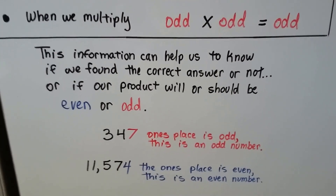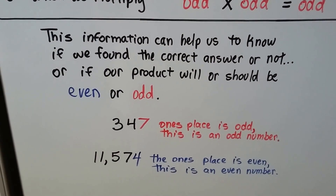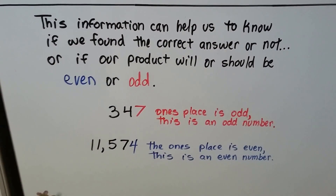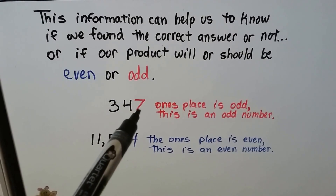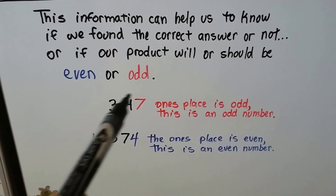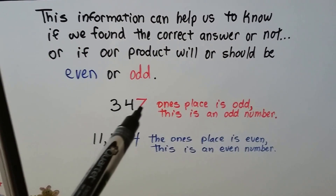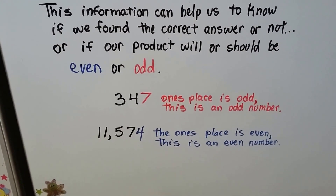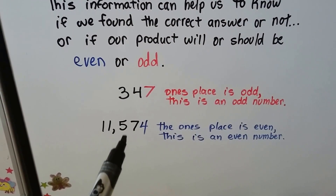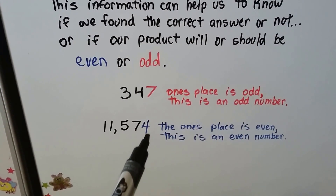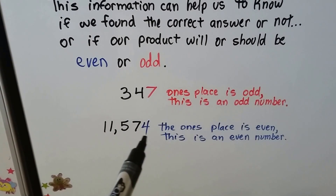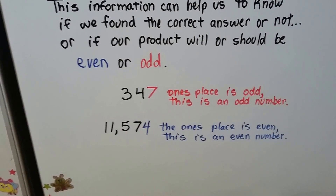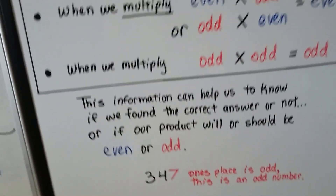Now what's the big deal? Well, this information can help us know if we found the correct answer or not — whether our product should be even or odd. For example, 347 has a 7 in the ones place, which is odd, so that makes the entire number odd. Whatever is in the ones place tells you whether the entire number is even or odd. For 11,574, there's a four in the ones place and that's even, so the entire number is even. We go by what's in the ones place.